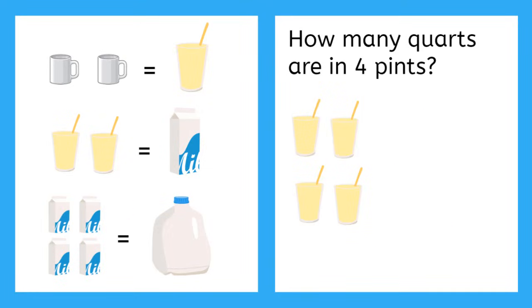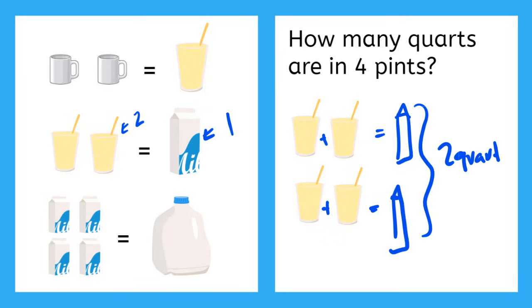Now this one says how many quarts are in four pints? So this is the quart here. One equals two pints. So here I have these two pints is going to equal one quart. And these two pints is going to equal one quart. So that would give me a total of two quarts equals four pints.